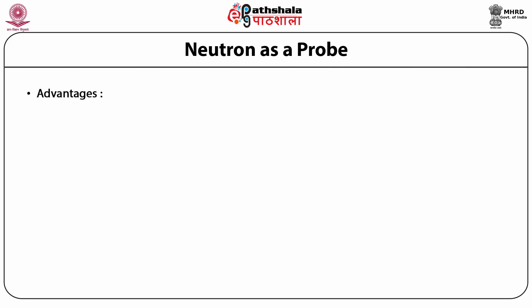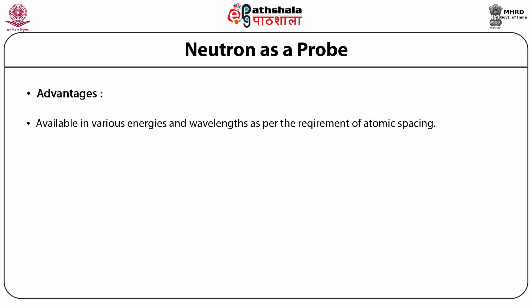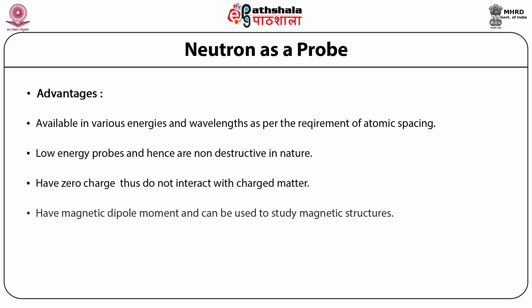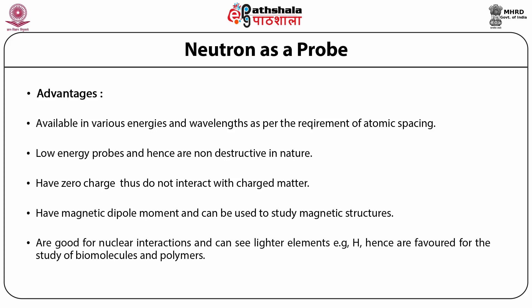Advantages of neutron as a probe: it is available in various energies and wavelengths as per the requirement of atomic spacing; it is a low-energy probe and hence non-destructive; it has zero charge and does not interact with charged matter; it has a magnetic dipole moment and can be used to study magnetic structure; and it is good for nuclear interaction and can detect lighter elements like hydrogen, making it favoured for study of biomolecules and polymers.